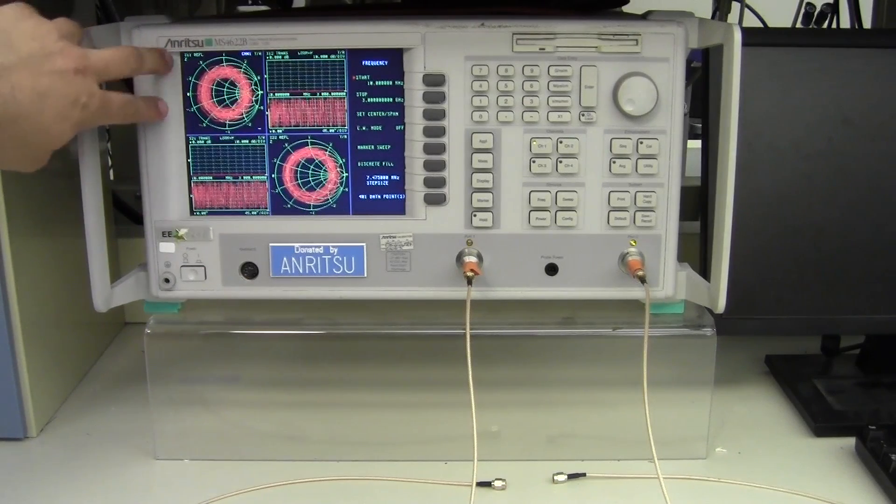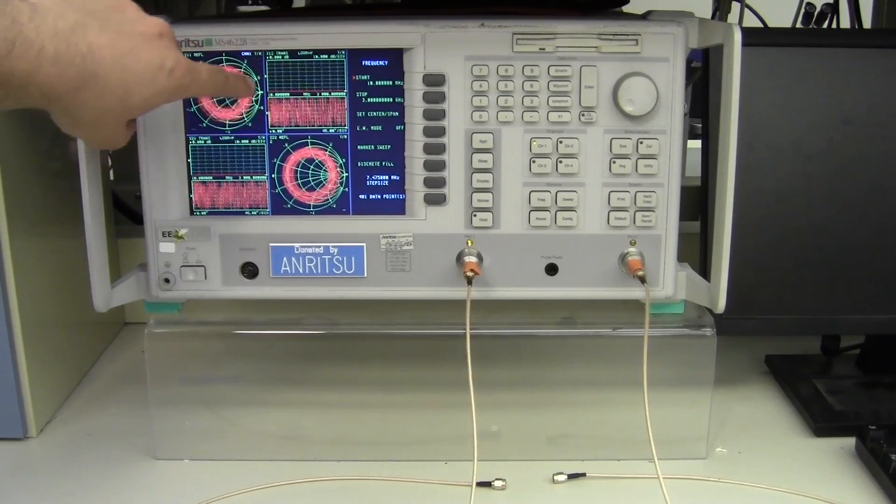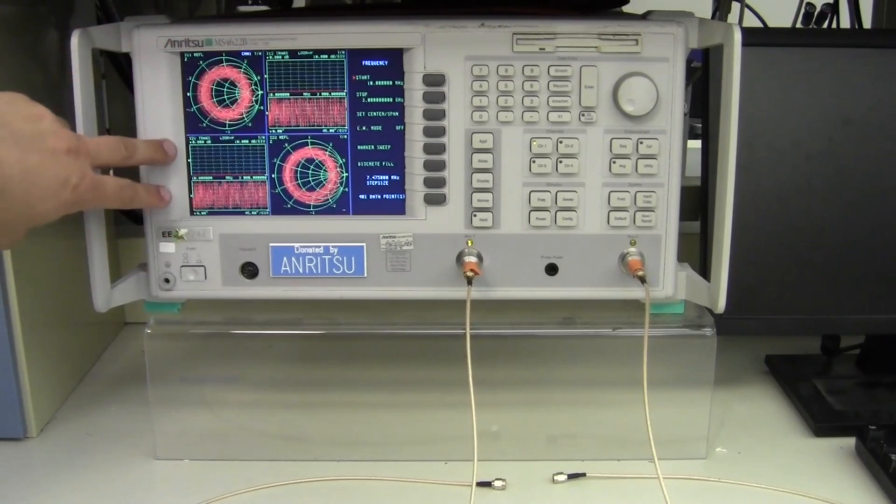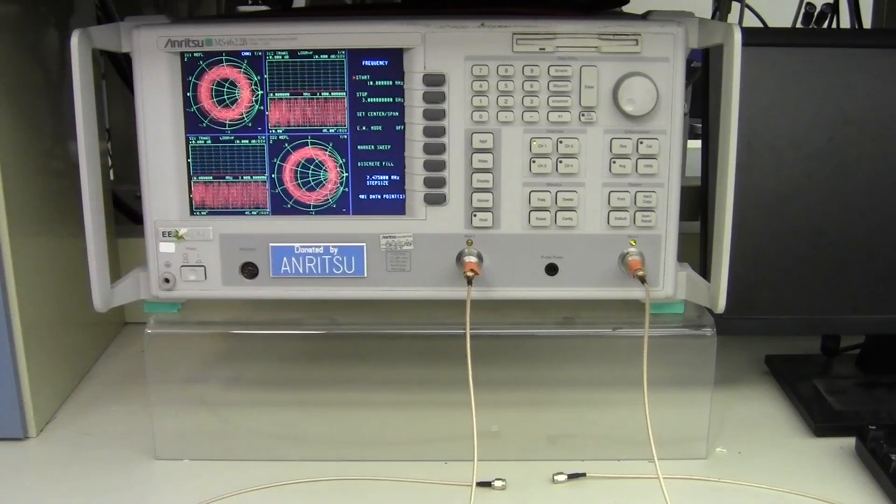Reflectance in port 1 as a Smith chart, transmission between port 1 and port 2 as magnitude and phase, transmission between port 2 back to port 1 as magnitude and phase, and then the reflection in port 2 as a Smith chart.